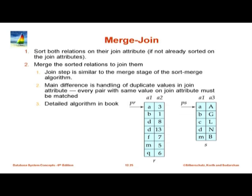There are alternatives that work when the relation n_r is large. The first of which is merge join. This is very easy to understand. The first step is to sort both relations on the join attribute. If they are already stored sorted, there is no need to sort; otherwise, we run external merge sort to get the sorted output.